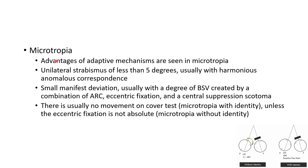Now let us discuss microtropia. The advantages of adaptive mechanisms are seen in microtropia. Microtropia is unilateral strabismus of less than 5 degrees, usually with harmonious anomalous correspondence. It is a small manifest deviation, usually with a degree of BSV created by a combination of ARC, eccentric fixation, and a central suppression scotoma. There is usually no movement on cover test unless the eccentric fixation is not absolute — this is called microtropia with identity. When there is movement on cover test, it is called microtropia without identity, occurring when eccentric fixation is not absolute.